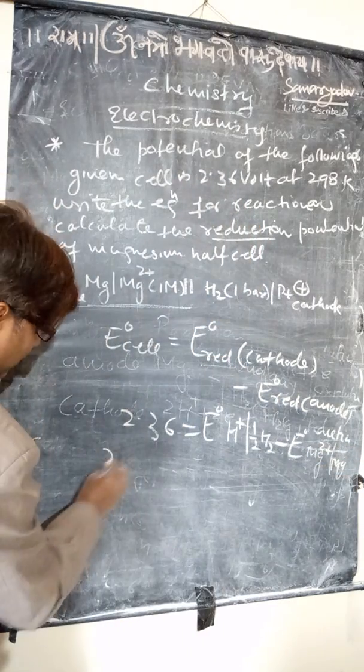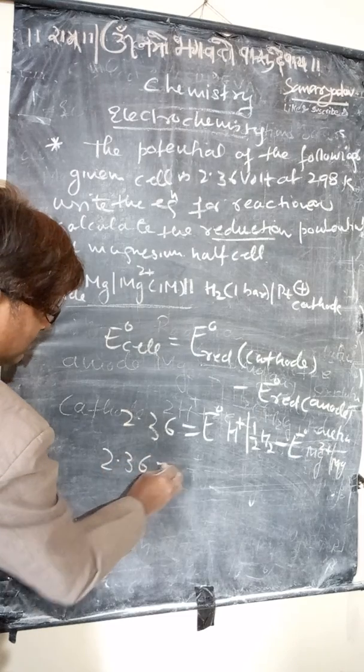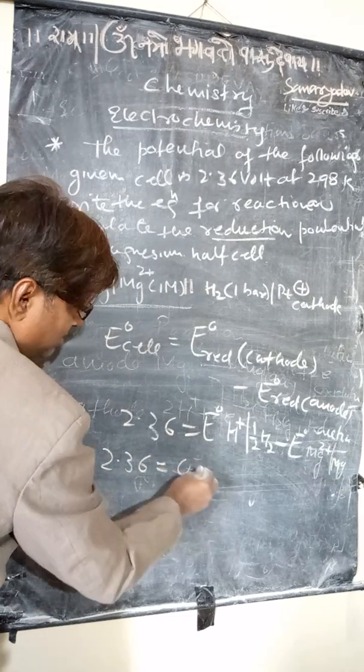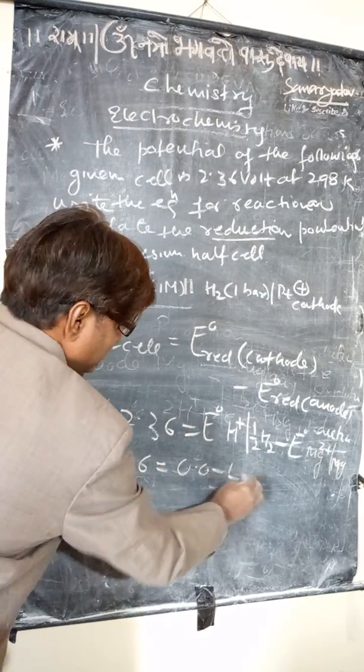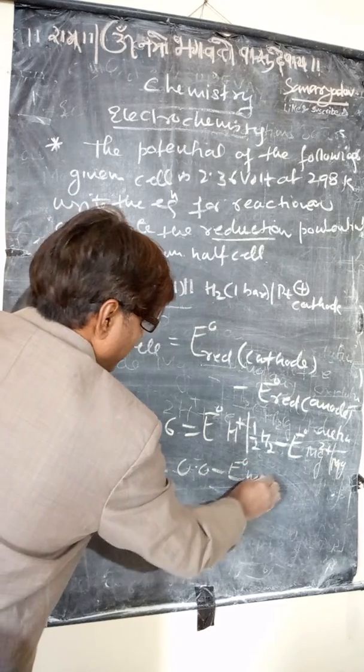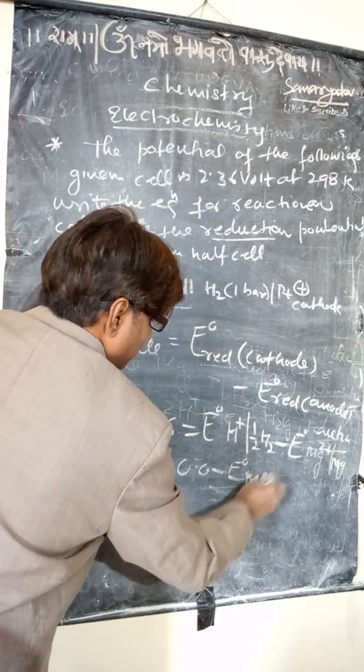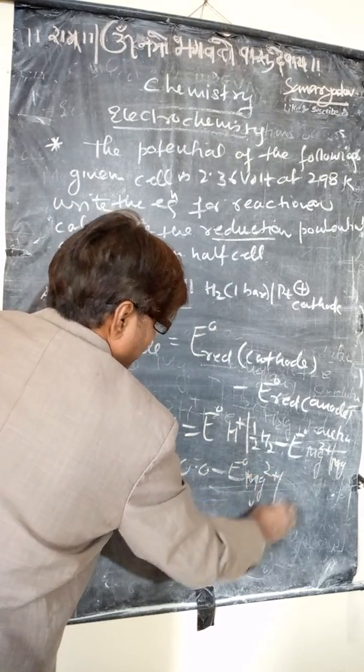Therefore, 2.36 equals 0.0 minus E° of Mg²⁺ | Mg.